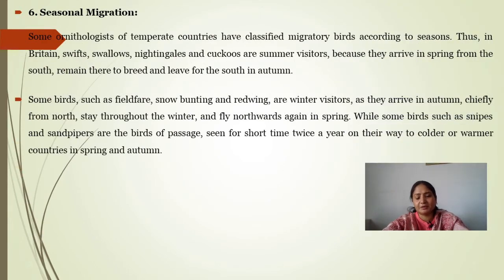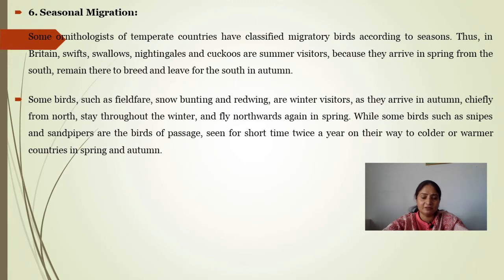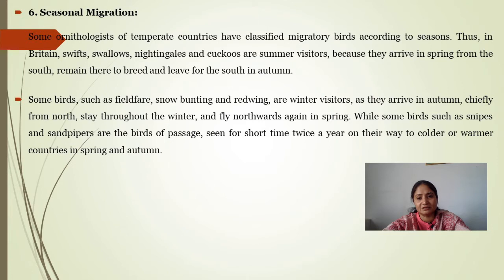Seasonal migration: every bird has its breeding season. Some ornithologists of the temperate countries have classified migratory birds according to season. In Britain, swift, swallow, nightingales, and cuckoos are summer visitors because they arrive in spring from the south, remain there to breed, and leave in autumn. Some birds such as fieldfare, snow bunting, and redwing are winter visitors, arriving in autumn chiefly from the north. Some birds such as snipe and sandpipers are seen for a short time twice a year on their way to colder and warmer countries in spring and autumn.